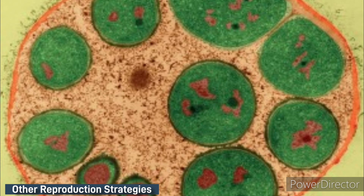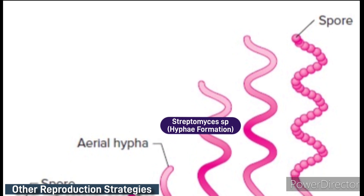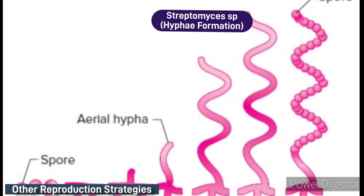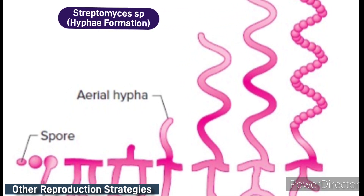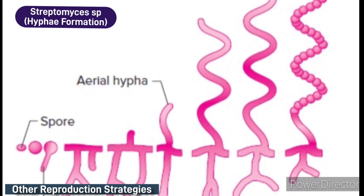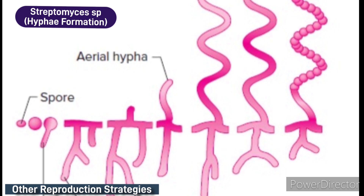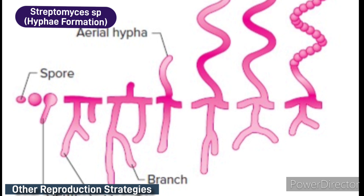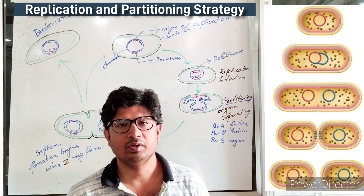Another example is Streptomyces, which shows fungal characteristics with the formation of hyphae — vegetative hyphae, aerial hyphae, branching, germ tube, and then spore formation. These are all fungal characteristics that are evidently seen in this bacterium. Remember, these are not the common processes — these are exceptions.